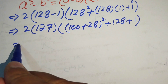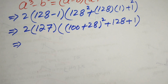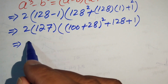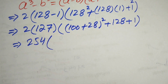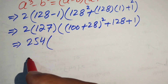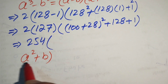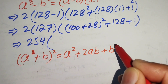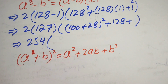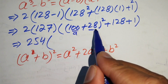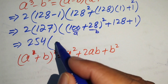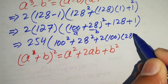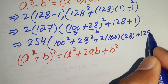We multiply these terms by traditional multiplication — no calculator is allowed. We get 254 times the expression in brackets. We apply the square identity: a plus b whole squared equals a squared plus 2ab plus b squared. With a equals 100 and b equals 28, this gives 100 squared plus 28 squared plus 2 times 100 times 28, plus 128 plus 1 equals 129.